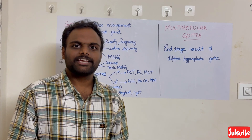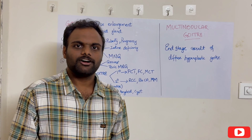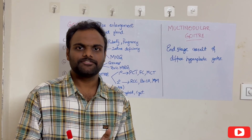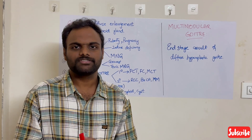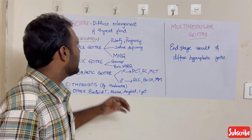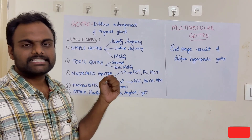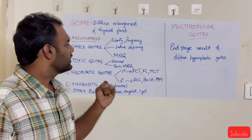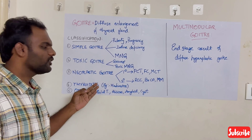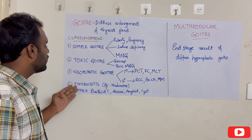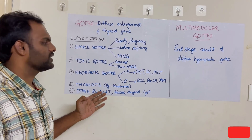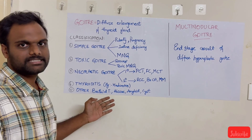Before going into multinodular goiter, let us know that goiter means the diffuse enlargement of thyroid gland. For the classification of goiter, we have simple goiter, toxic goiter, neoplastic goiter, thyroiditis, and other classifications which can be under miscellaneous.